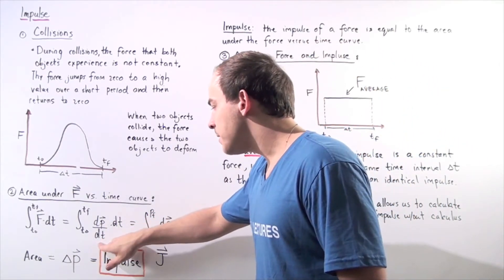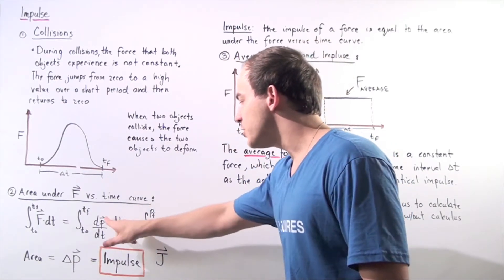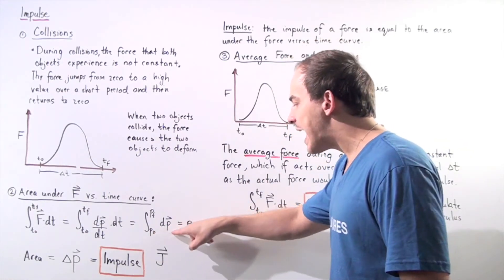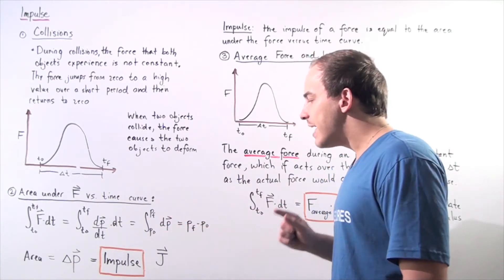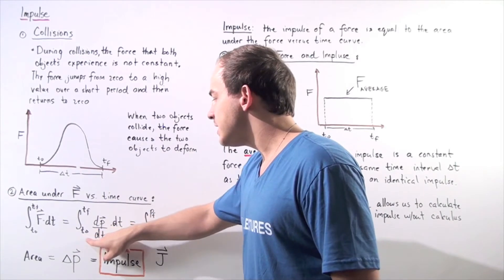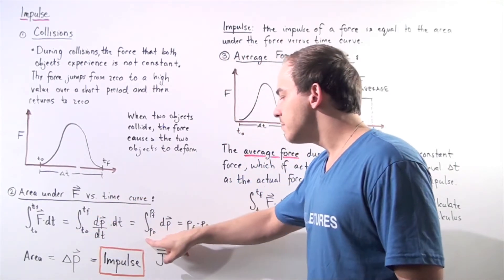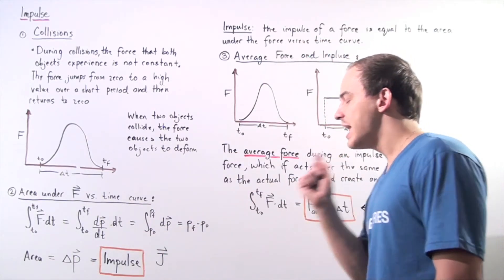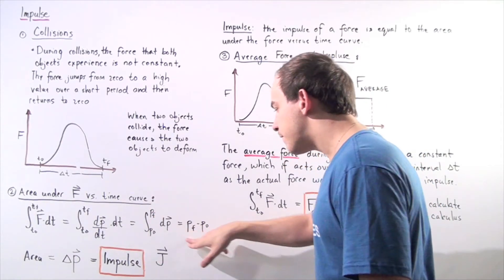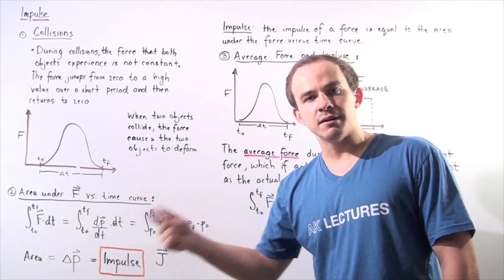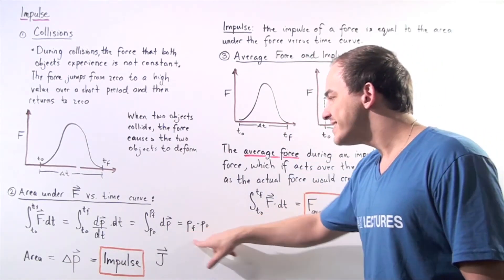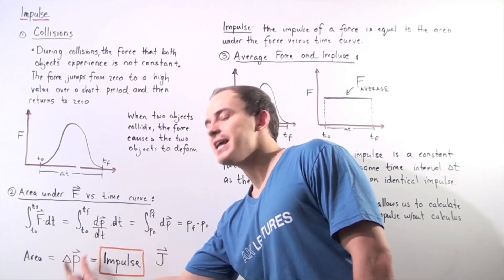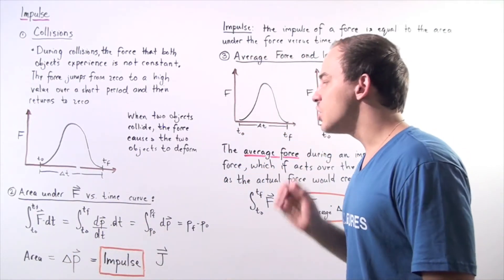Notice the dt appears on the bottom and on the top, so we can cancel them out. We no longer have a time term — no dt term — so we change our limits from t0 and tf to p0 and pf, where p0 is our initial momentum and pf is our final momentum. Integrating this gives us p-final minus p-initial. So the area underneath the force versus time curve is equal to the change in momentum of the object, which is also known as impulse.